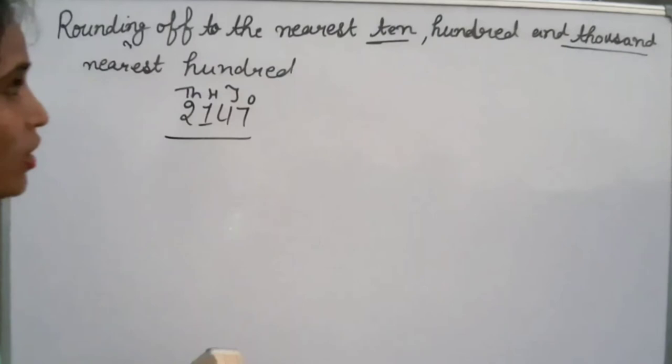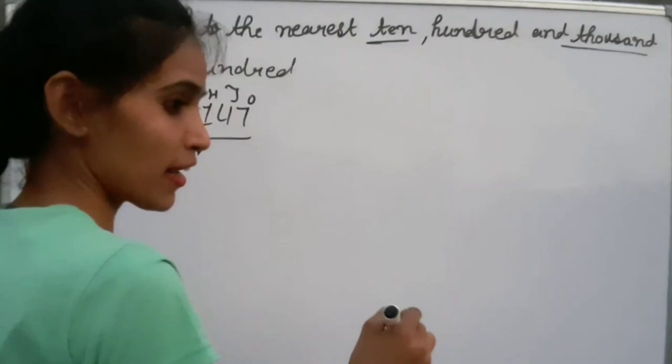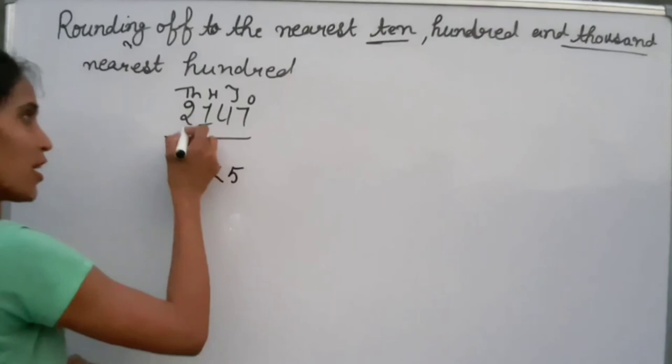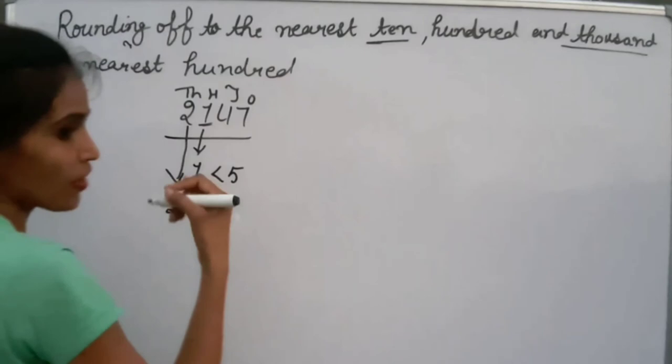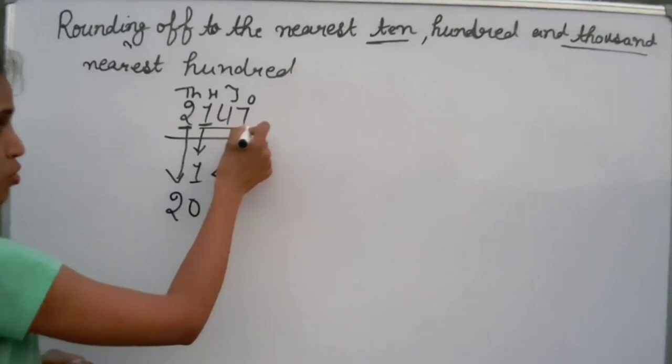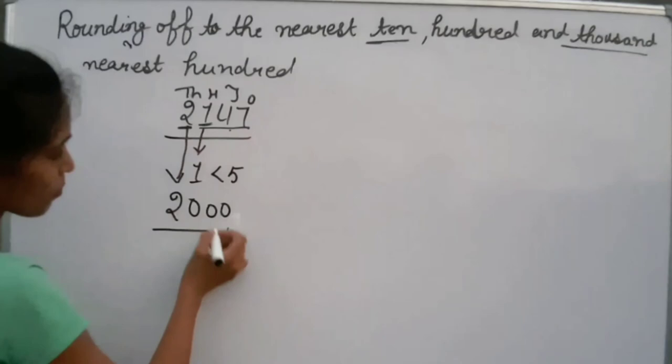To round to the nearest 1000, we check the hundreds digit. Our hundreds digit is 1, which is less than 5. Since it is less than 5, we do not add 1 to the thousands place — it stays as 2. The digits 1, 4, and 7 all become 0. So rounding 2147 to the nearest 1000, our answer is 2000.